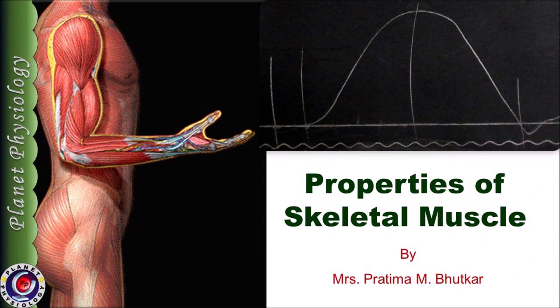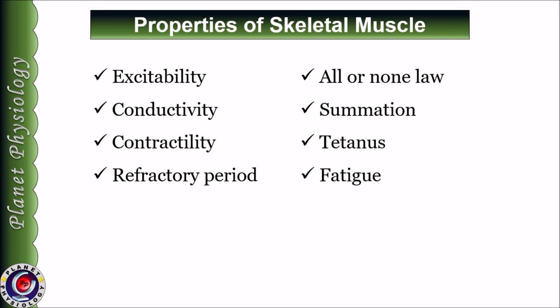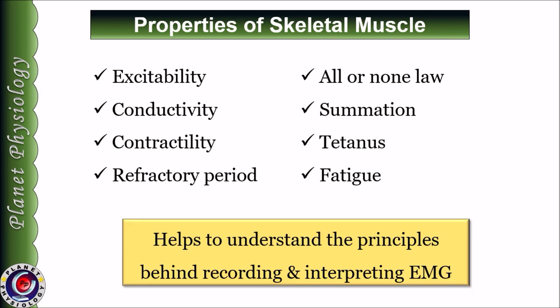Hi, this is Pratima from Planet Physiology. In this video we shall have a brief overview on properties of skeletal muscle. We shall discuss electrical and mechanical properties with respect to their definitions, causes and significance. Skeletal muscle exhibits various properties like excitability, conductivity, contractility, refractory period, all or none law, summation, tetanus and fatigue. Knowledge about these properties helps us to understand the principles behind recording and interpreting EMG, that is electromyogram.